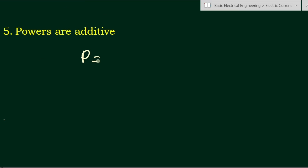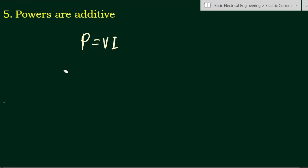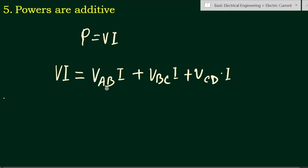The fifth property is that powers are additive. Power equals voltage times current, V times I. The total power VI equals the sum of the powers across each resistance: Vab·I for R1, plus Vbc·I for R2, plus Vcd·I for R3.